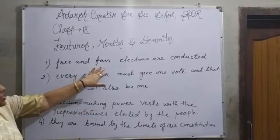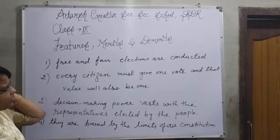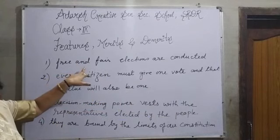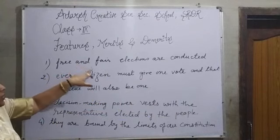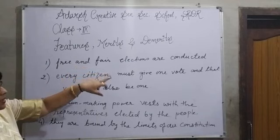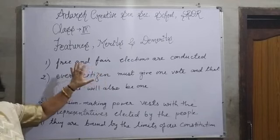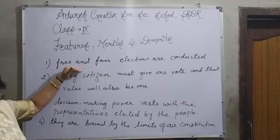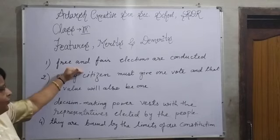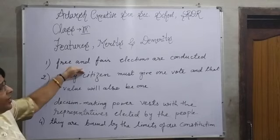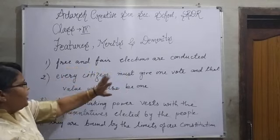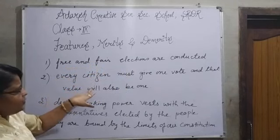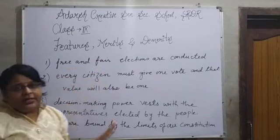Free and fair elections are conducted means everybody is considered equal — universal adult franchise — the representatives are given votes and the elections are conducted in a free and fair manner.